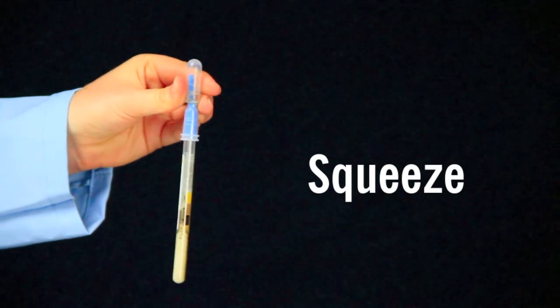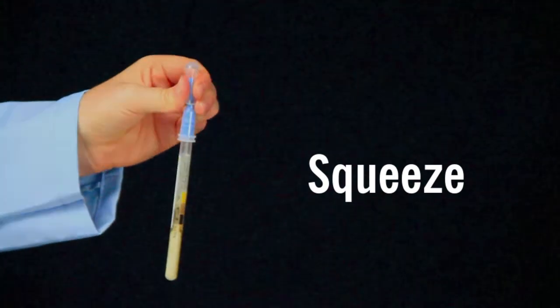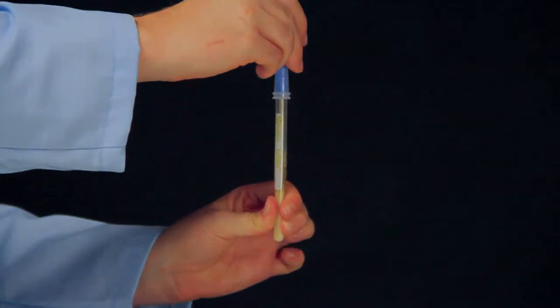Next, squeeze the bulb three to four times to expel liquid into the tube. Gently massage the bottom of the tube by squeezing the tube three times.